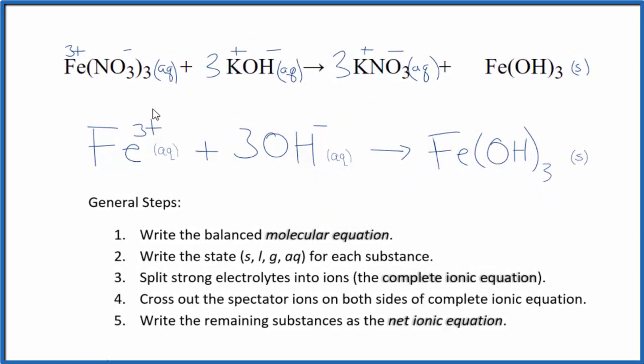You'll note that charge is conserved. We have a 3 plus here. 3 times 1 minus. That's 3 minus. They add up to 0. We have a net charge of 0. And over here, we have a neutral compound. Net charge of 0. If you count the atoms up, they're balanced as well.